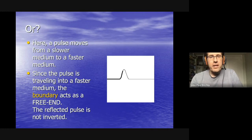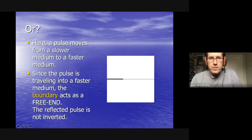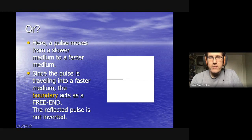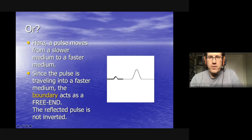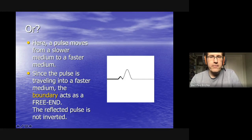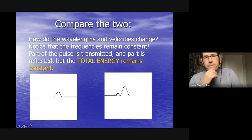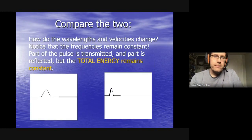The other option is starting in the slow medium. When the wave reaches the boundary it does reflect, but it reflects back on the same side — so there's no inversion; this acts like a free end. A lot of the energy also transmits into the fast medium, where the wave travels noticeably faster — it covers a longer distance in the same amount of time.